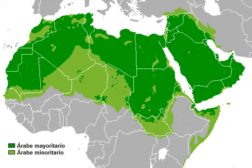Other innovations include the elimination of other prefix-conjugated mood-aspect forms, such as a present tense formed by doubling the middle root, a perfect formed by infixing -t- after the first root consonant, and a jussive formed by stress shift, in favor of new moods formed by endings attached to the prefix conjugation forms: -u for indicative, -a for subjunctive, no ending for jussive, and -anna for energetic. The development of an internal passive is also noted. These features are shared by Classical Arabic and the Saifetic and Hismaic inscriptions, and are evidence of common descent from a hypothetical ancestor, Proto-Arabic.